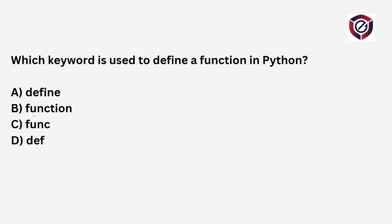Which keyword is used to define a function in Python? When we want to define a function, such as a sum of A and B, we use the keyword 'def' — D-E-F. For example: def sum(a, b). The other options such as 'defined', 'function', or 'func' are not valid keywords in Python. The correct keyword is def.